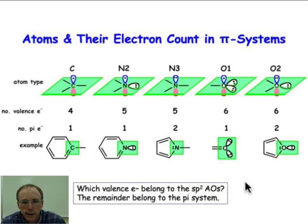The number of electrons that an atom contributes is going to depend not only on the atom type, but also on the mode of connectivity. What we're going to end up doing is taking the number of valence electrons and deciding how many of those valence electrons belong to the sp2 atomic orbitals. By the way, we're always going to assume in these systems that every atom is sp2 hybridized if it's part of the pi system. So how many electrons contribute to the sp2 atomic orbitals? And then the number of valence electrons that are left over will be part of the pi system.